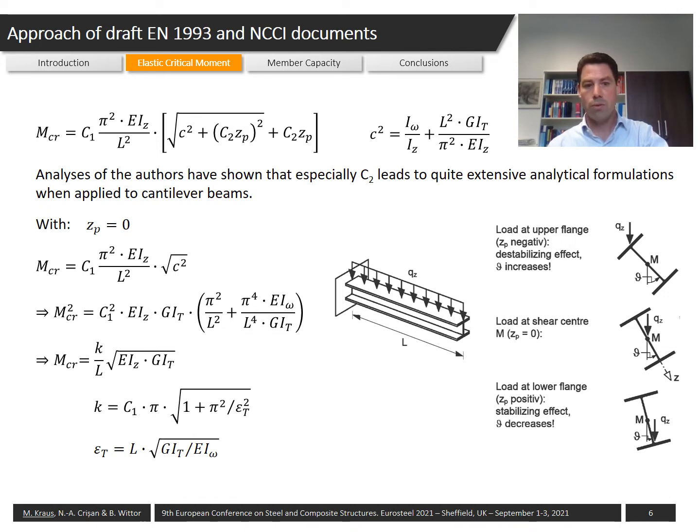In doing so, the equation somehow simplifies and we can reform it slightly, introducing the factor k as you can see in the lower formulas of the slide, and the member characteristic εT, which somehow represents the primary torsional stiffness in comparison to the secondary torsional stiffness.